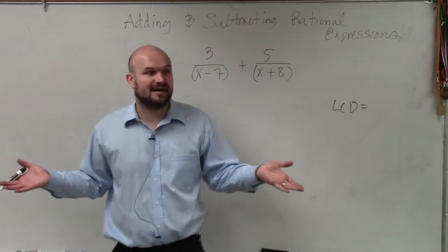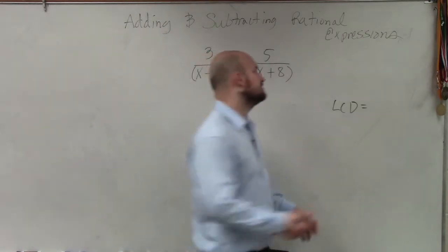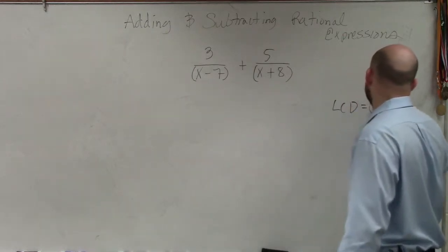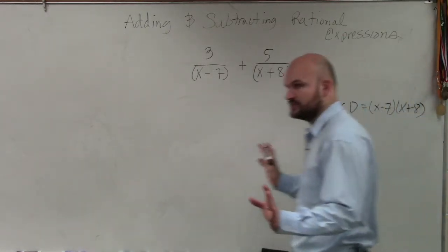So we can always default by then taking the product of our two denominators, right? So I can say my LCD is going to be x minus 7 times x plus 8. And I'll just leave it just like that.